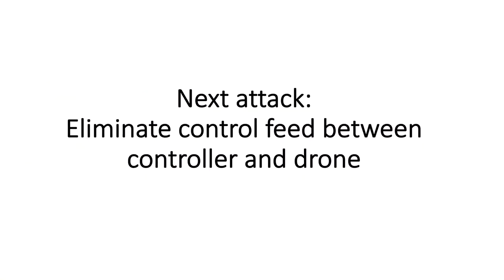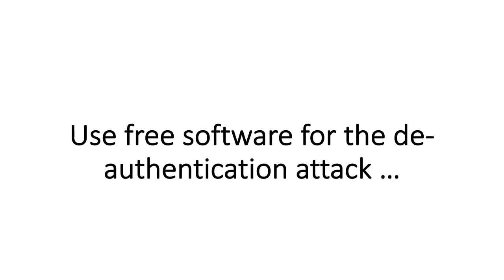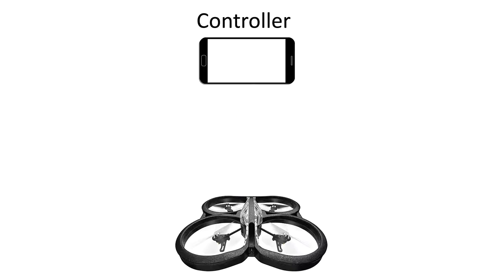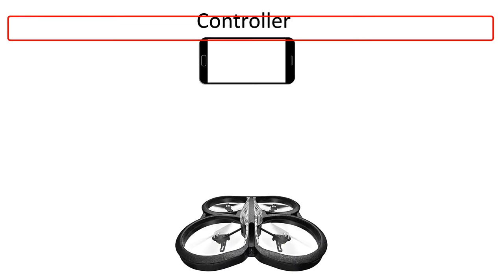Let's look at another attack: we're going to eliminate the control feed between the controller and the drone. To control the drone, you need the controller app — either a physical controller or a smartphone app — to connect to the drone. A deauthentication attack removes that connection between the controller and the drone, meaning there's no longer a connection between the two. To do this, we'll use free open source software called Aircrack-NG.